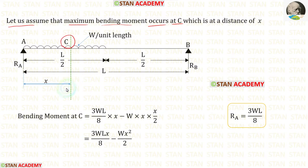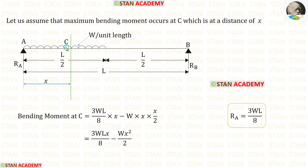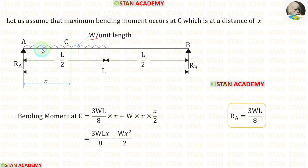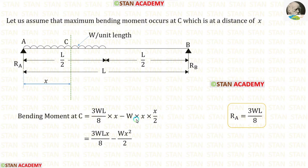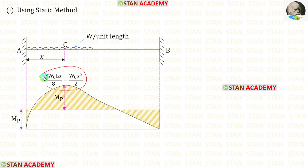Let us assume that the maximum bending moment occurs at point C, which is at a distance x from the left support. The moment at point C: RA acts clockwise (positive) with distance x, and the UDL acts anti-clockwise (negative) over distance x, giving a term of x × x/2 = x²/2. So the bending moment at C is (3wL/8)·x − wx²/2. This is how the ordinate is derived.